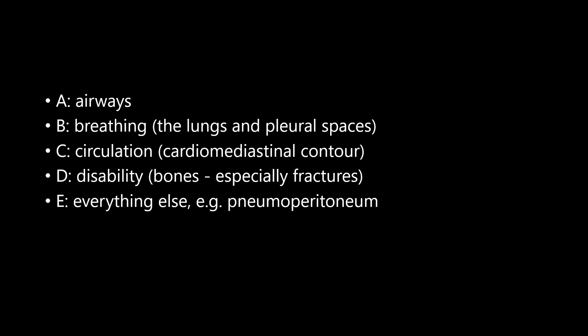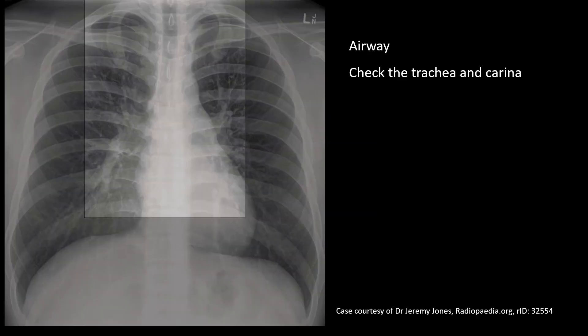In a chest x-ray, you should look for: airway, breathing, lung and pleural spaces, cardiomediastinal contour, disability of structures, bones, and any pathology like pneumoperitoneum or hydrothorax. Starting with the airway, first try to identify the trachea, then look for the carina.